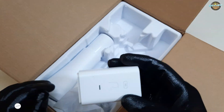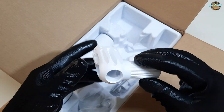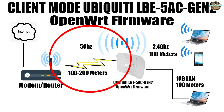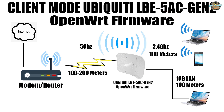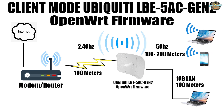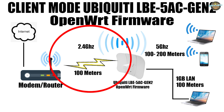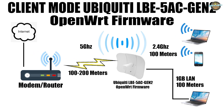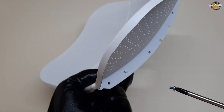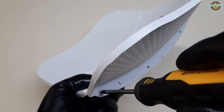One great feature of OpenWRT is its ability to work in dual band mode. You can configure the 5 GHz radio as a wireless client to receive a signal from another access point, while the 2.4 GHz radio can be used to broadcast a new Wi-Fi network. Alternatively, you can also set up the 2.4 GHz radio as a wireless client and the 5 GHz radio as the access point. The possibilities are endless and the flexibility of OpenWRT makes it easy to customize your network setup according to your needs.